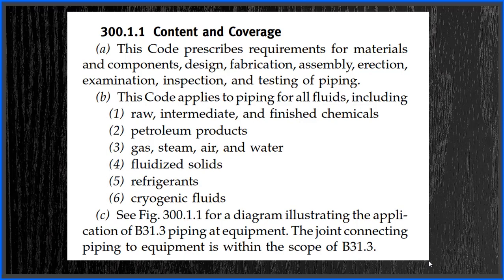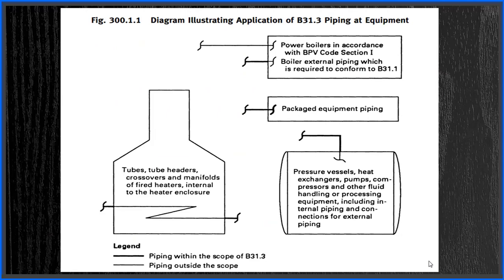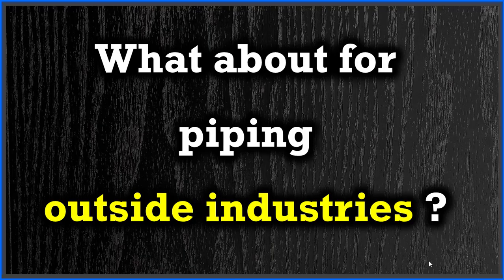Point C gives a demarcation between what is within scope and what is outside the scope. If you look at Figure 300.1.1 in ASME B31.3, it exactly shows the boundary limit. The legend at the bottom says the thicker line shows piping within the scope of B31.3, and the thin line shows piping outside the scope. It is self-explanatory — thin lines are out of scope and thick lines are within the scope of B31.3.